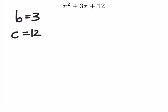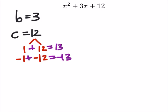Let's look at factors of 12, like 1 and 12, or negative 1 and negative 12. When I add these two, I get 13. When I add these two, I get negative 13, neither of which are the 3 which we need.